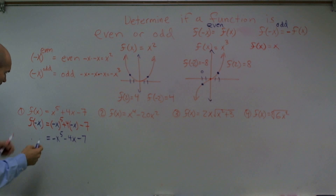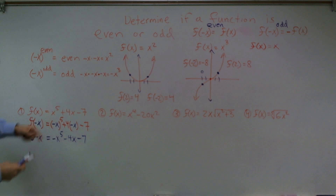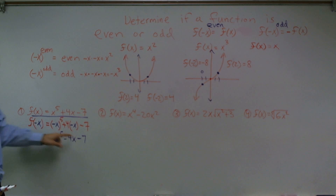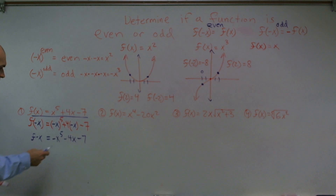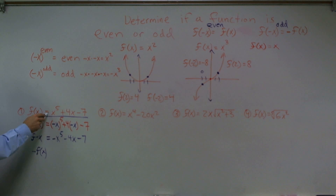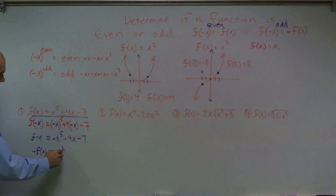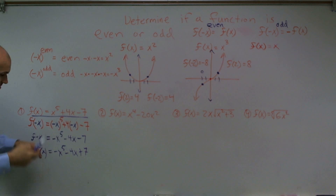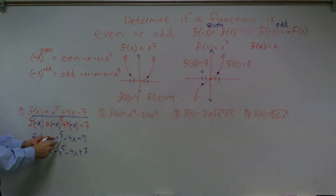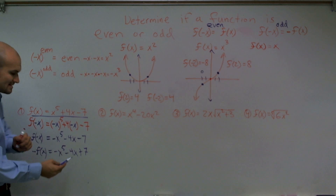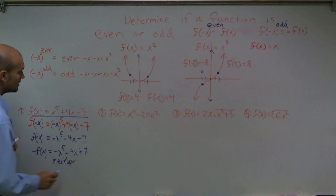Negative x times 4 gives negative 4x, minus 7. Now I have my f of negative x result. If it equals my f of x — which is positive x to the fifth plus 4x minus 7 — I need to check: does this look the same as my original? The answer is no — that's positive and this is negative, so the signs are different. What is negative f of x? That would be negative x to the fifth minus 4x plus 7 — the opposite sign of every term. Looking at my result, the negative 4x matches, but the sign in front of 7 is not the same. Therefore, this graph is neither odd nor even.